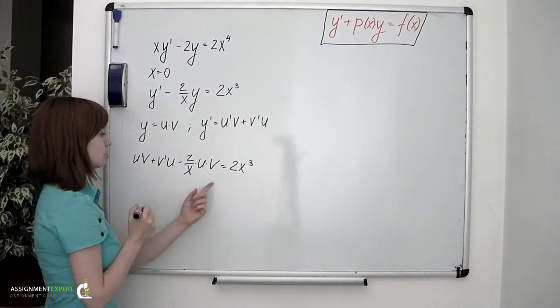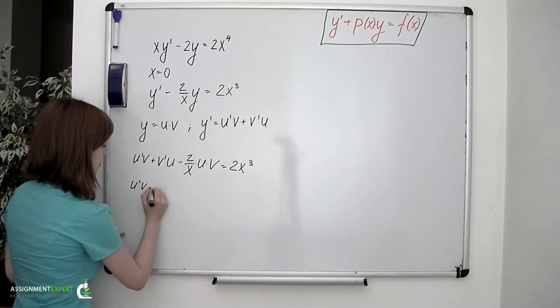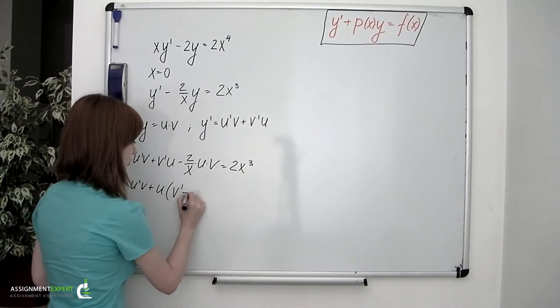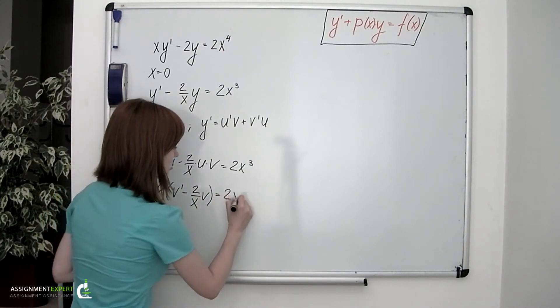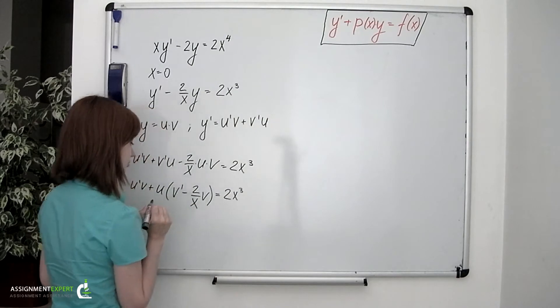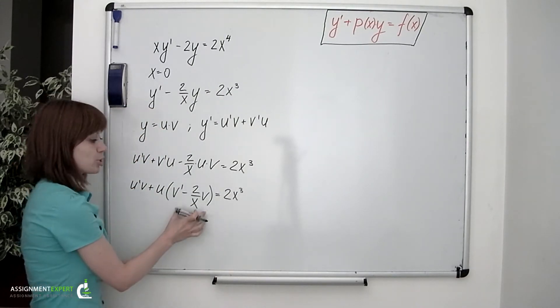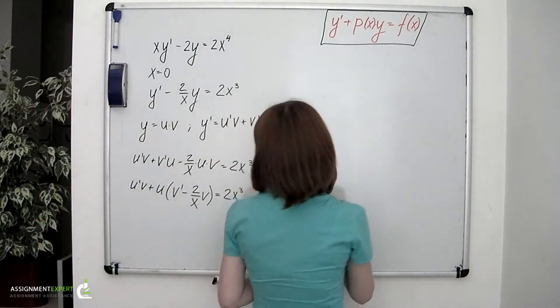We can factor out u on our left. So we'll have u prime v plus u times v prime minus 2 over x times v equals 2x cubed. We're choosing the v function such that the expression within these brackets equals 0. So this is another equation to solve.